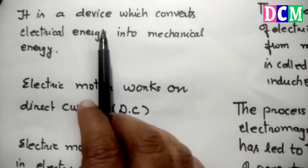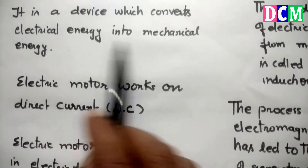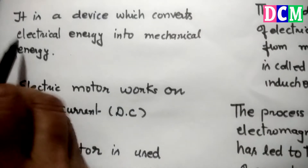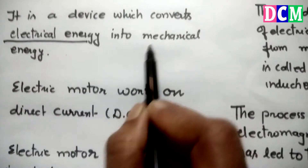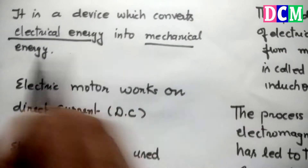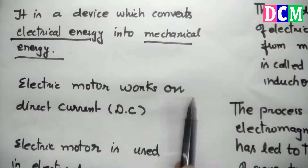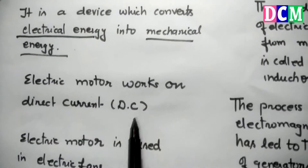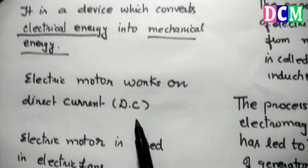An electric motor is a device which converts electrical energy into mechanical energy. This point is very important. Electric motor works on direct current, that is DC.